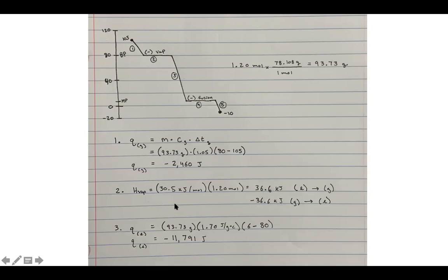Step 3: cooling of the liquid. Still 93.73 g, but specific heat for liquid benzene is 1.7 J/(g·°C). Temperature change is from 80°C (initial as liquid) to 6°C (freezing point), so ΔT = 6 − 80 = −74°C. The heat for step 3 comes out to −11,791 joules.